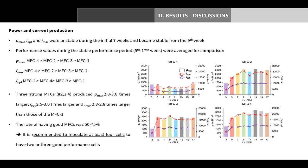To sum up, the three strong MFCs (MFC2, MFC3, and MFC4) produced maximum power density 2.8 to 3.6 times larger, optimum current density 2.5 to 3.0 times larger, and maximum current density 2.3 to 2.8 times larger than MFC1. In four replicates, two MFCs had very good performance (MFC2 and MFC4), one was good (MFC3), and one was bad (MFC1).